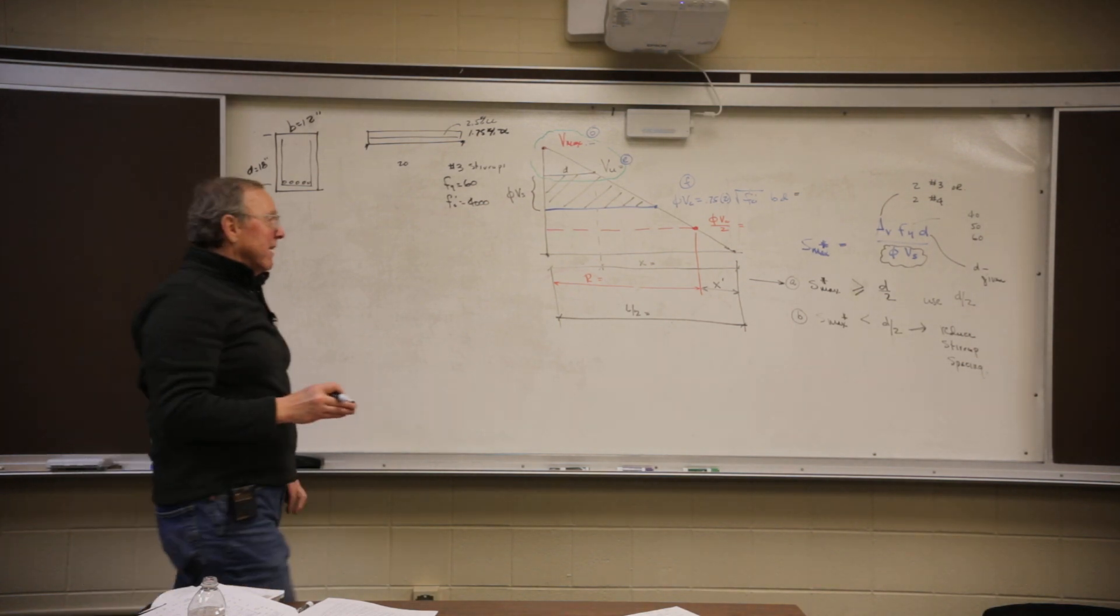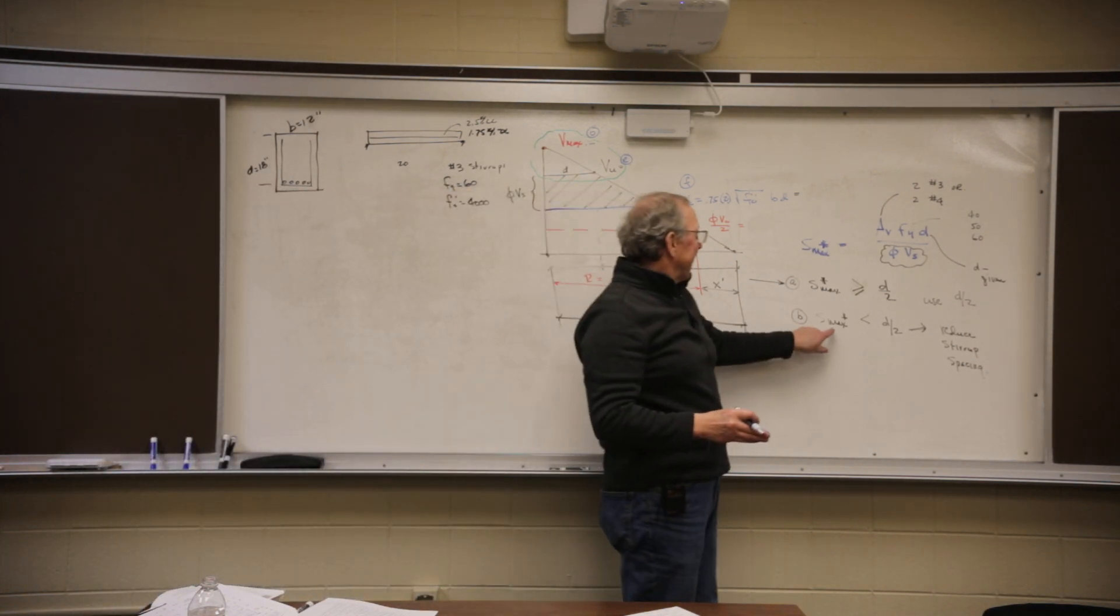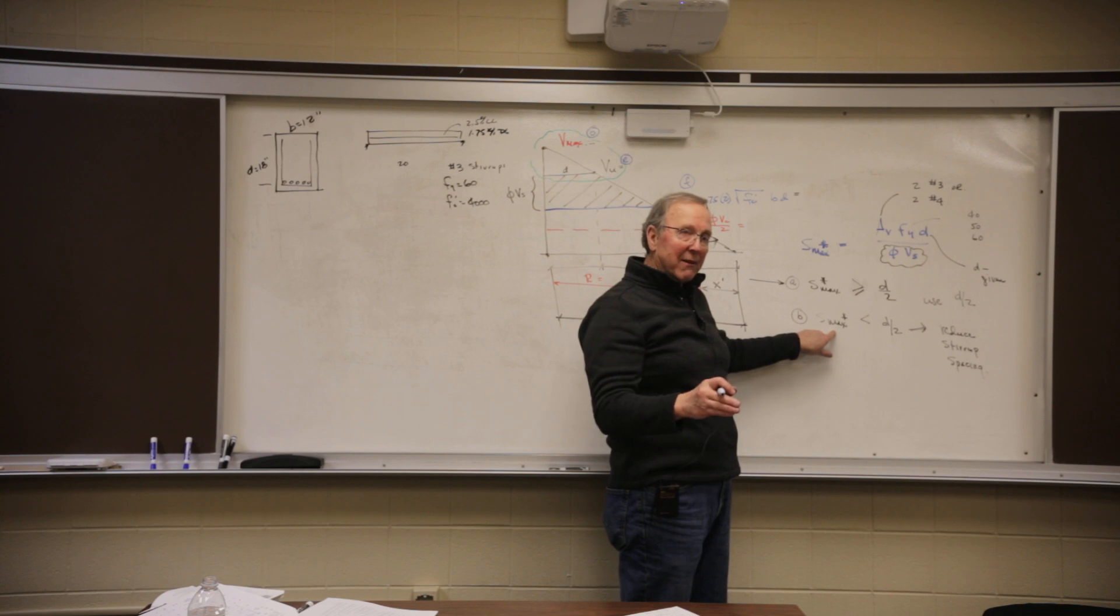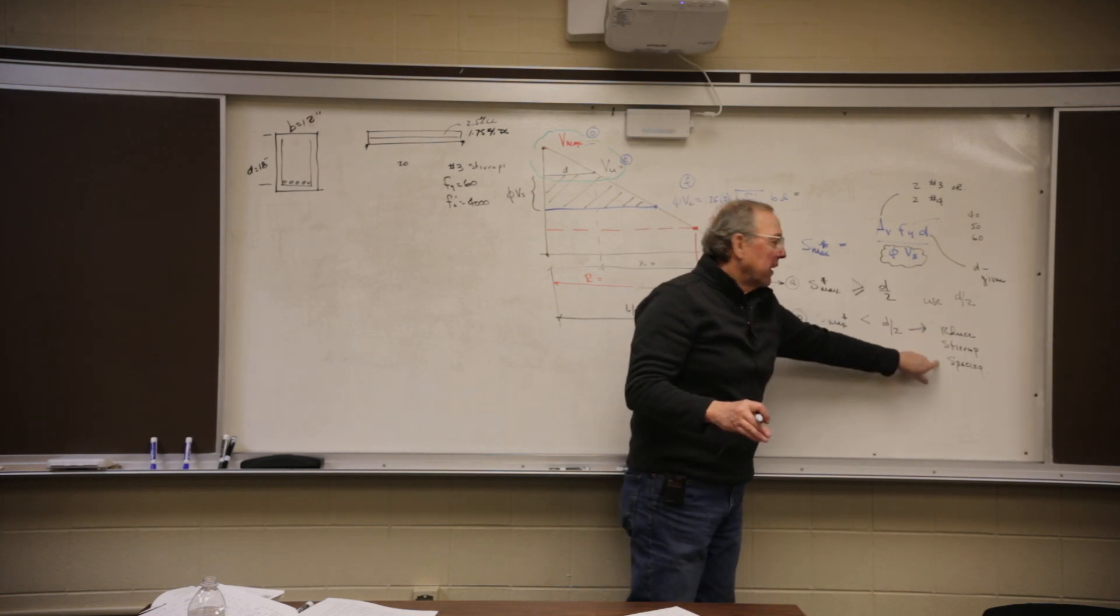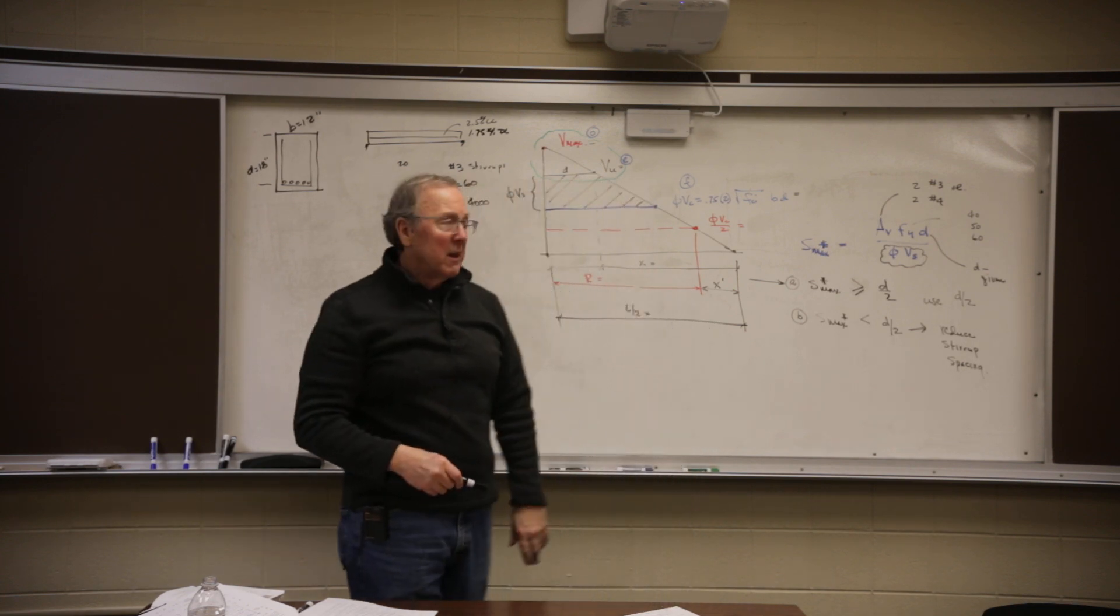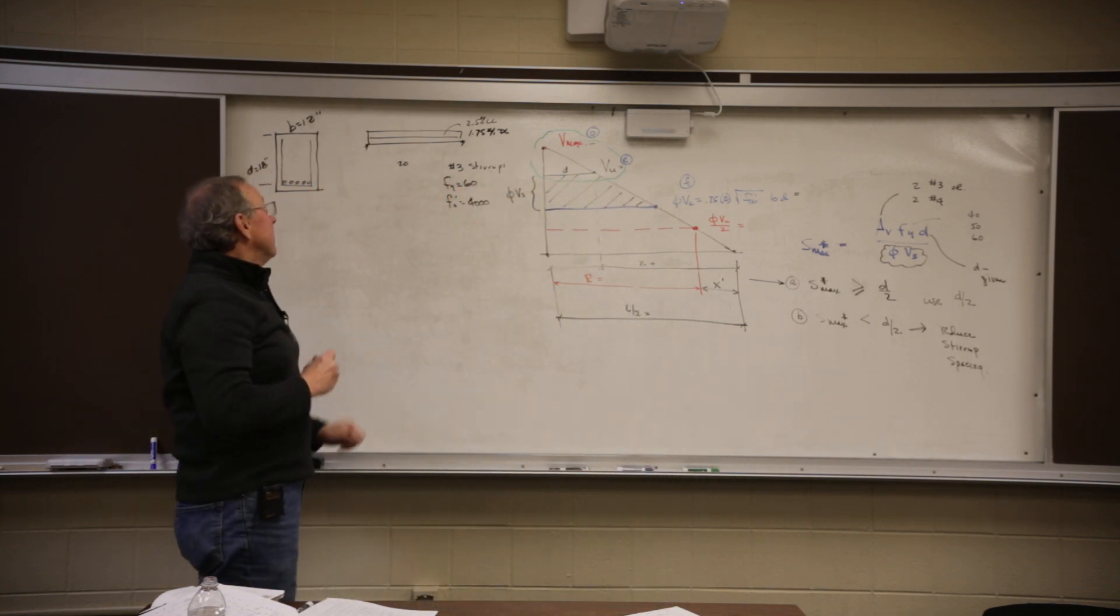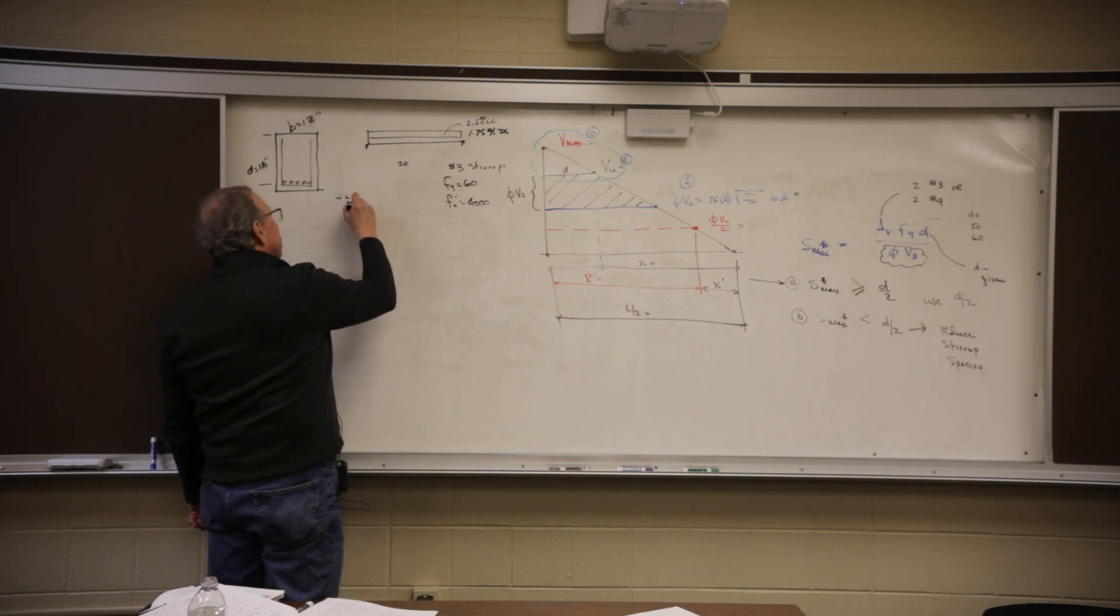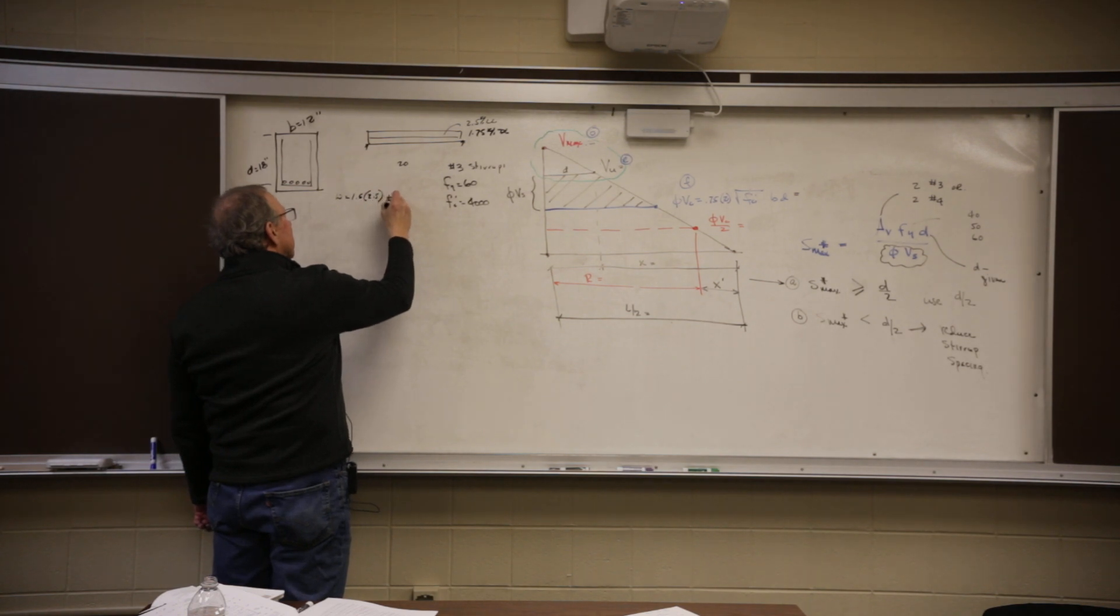So when I get done calculating, if S max star is bigger than 9, we use 9 inches. If it's smaller than 9, we've got some reduction to do. It's going to take us a little bit of time there. Okay, so let's do what we did before, figure out what V max is.